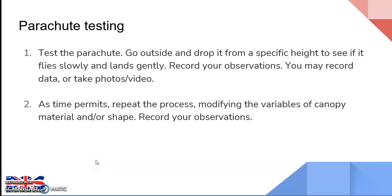When you've done that, you're going to test the parachute. You can do this outside or inside if you have enough height — maybe a small step ladder to drop it from and see if it flies slowly and lands gently. Make a record of your observations by recording actual data: suggestions include the length of the flight, the horizontal distance it travels, and the height you're dropping it from vertically.